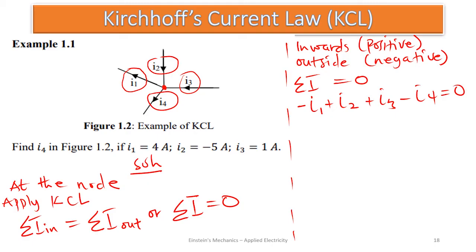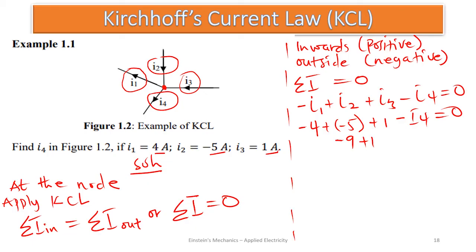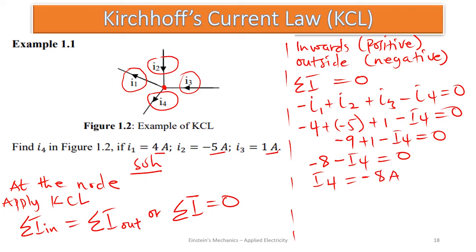Making i4 the subject, i4 equals negative 8 amperes. Let's verify: summation of current inside the node should equal current outside. Those entering are i2 and i3, so i2 plus i3 should equal i1 plus i4. That is negative 5 plus 1 equals 4 plus negative 8, which gives negative 4 equals negative 4. Our solution is correct.